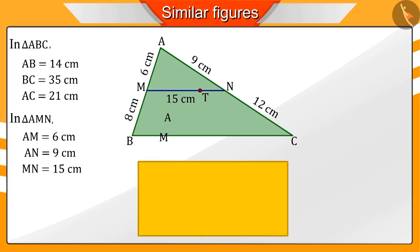If you pay attention, you will find that AM, MB and AN, NC are mutually proportional.